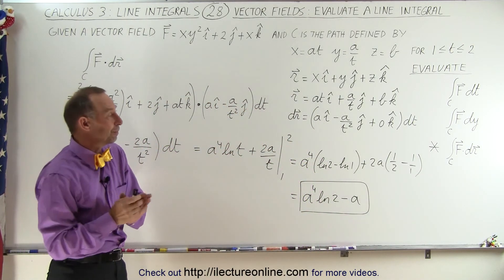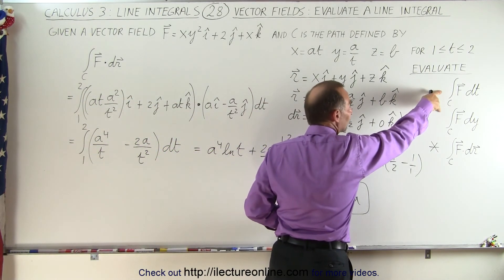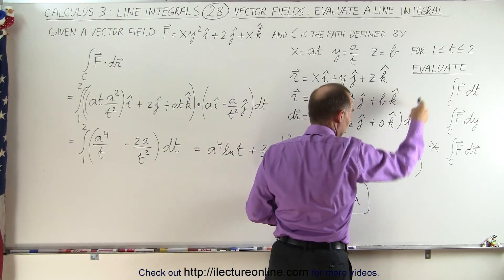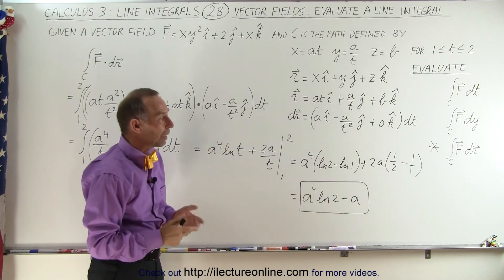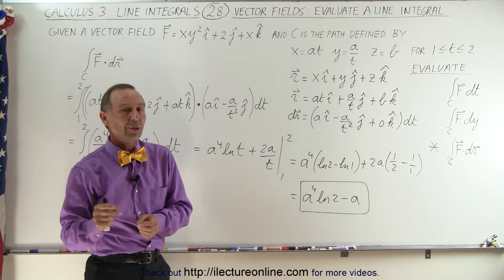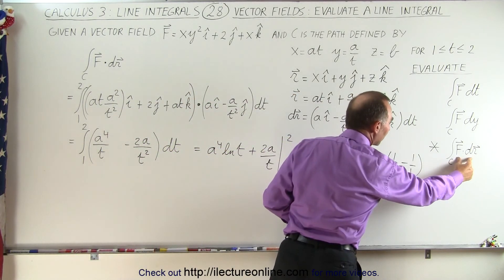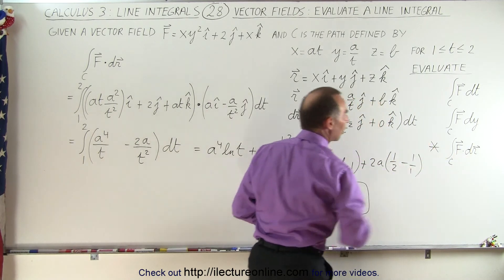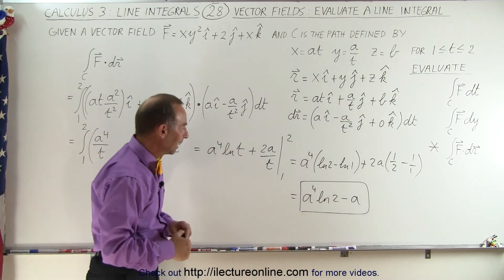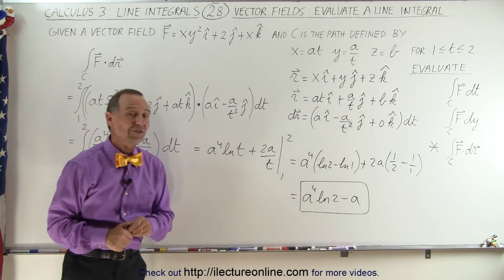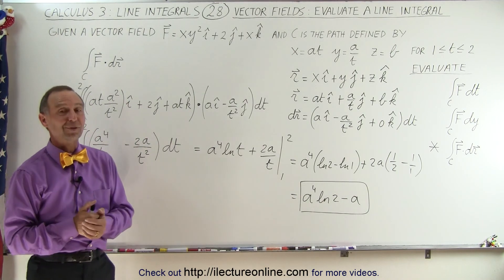This is the evaluation of the line integral. Notice we get a very different answer — in the previous two evaluations we ended up with a vector quantity as the result, but in this case we end up with a scalar answer. That's because we have a dot product, which causes the vector components to disappear. The final answer is a⁴·ln(2) minus a, and that's how it's done.